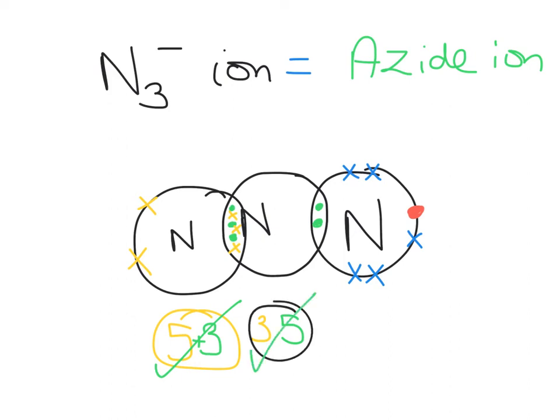And then this nitrogen on the right has got the 2 that were there from the dative bond, the 5 that it had of its own, and the 1 that it had because it was the ion. And it had arrived with an extra 1, and it has to arrive with an extra 1 because the whole thing has a negative charge. And 2 plus 5 plus 1 is also 8. So that one is happy as well.